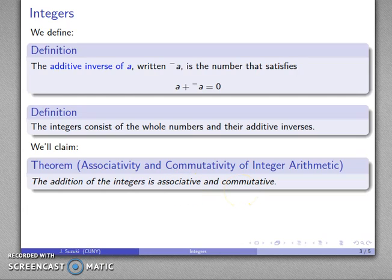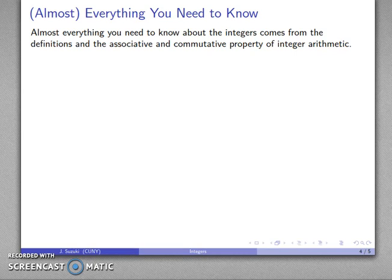And it turns out if you know the definition of the additive inverse, if you accept that addition of integers is associative and commutative, then everything that you do with whole number arithmetic allows you to find every question that can be asked with integer arithmetic. So this is almost everything you need to know.